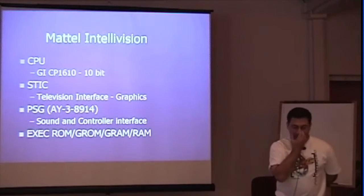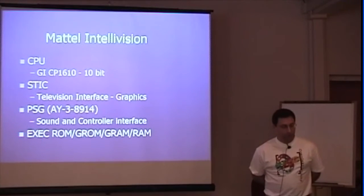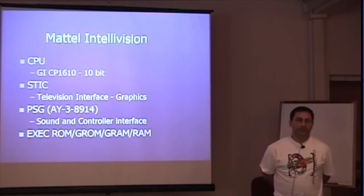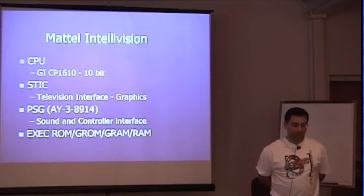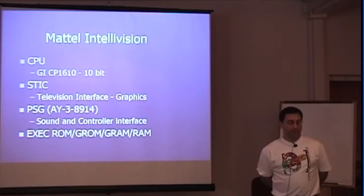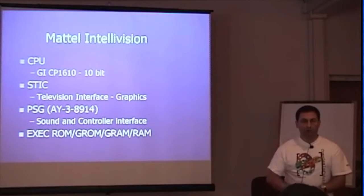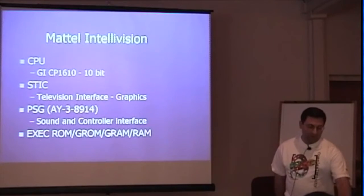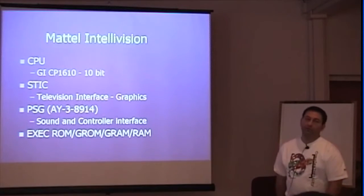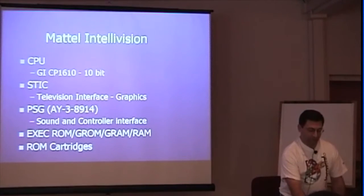Internally, the base Intellivision had an interesting CPU — a General Instruments CP1610, which was a 10-bit CPU that operated on a 16-bit address bus. You had a chip that did the television interface — basically bitmap with sprite graphics. You had a chip that did sound, and additionally handled the interface for the controllers. That's the standard breakdown for systems of that type at the time. Internally there was firmware with exec programming — sort of a mini operating system — ROM with graphic images, different kinds of RAM for graphics, and cartridges that were ROM-based.